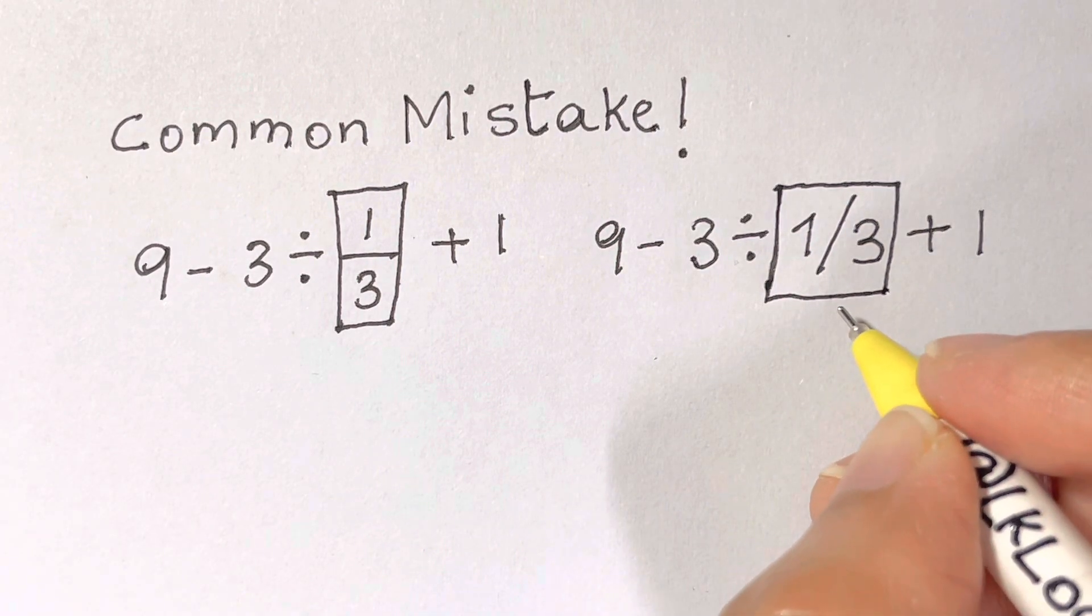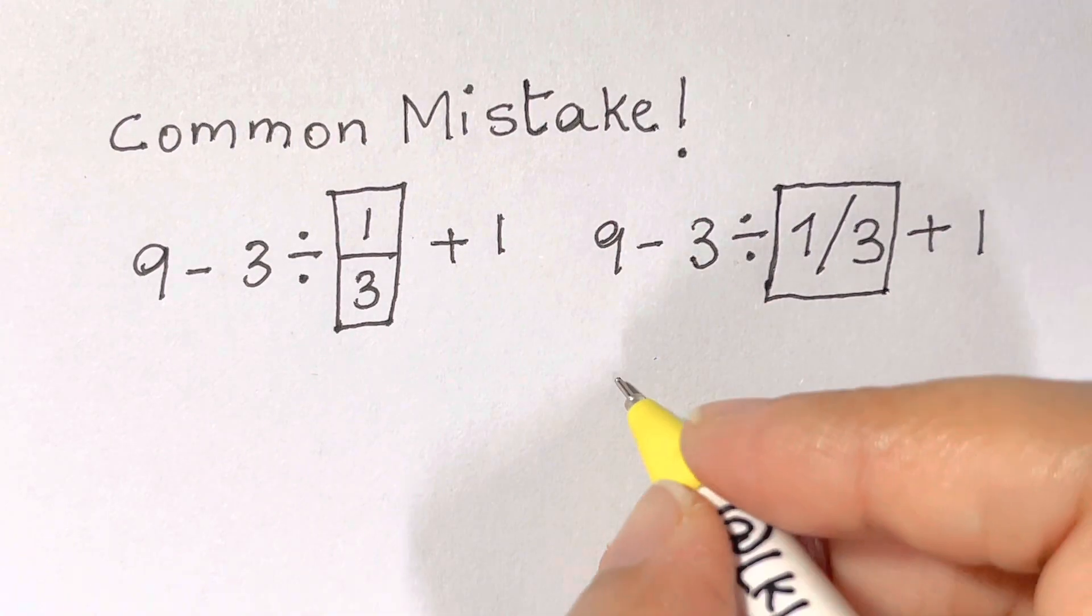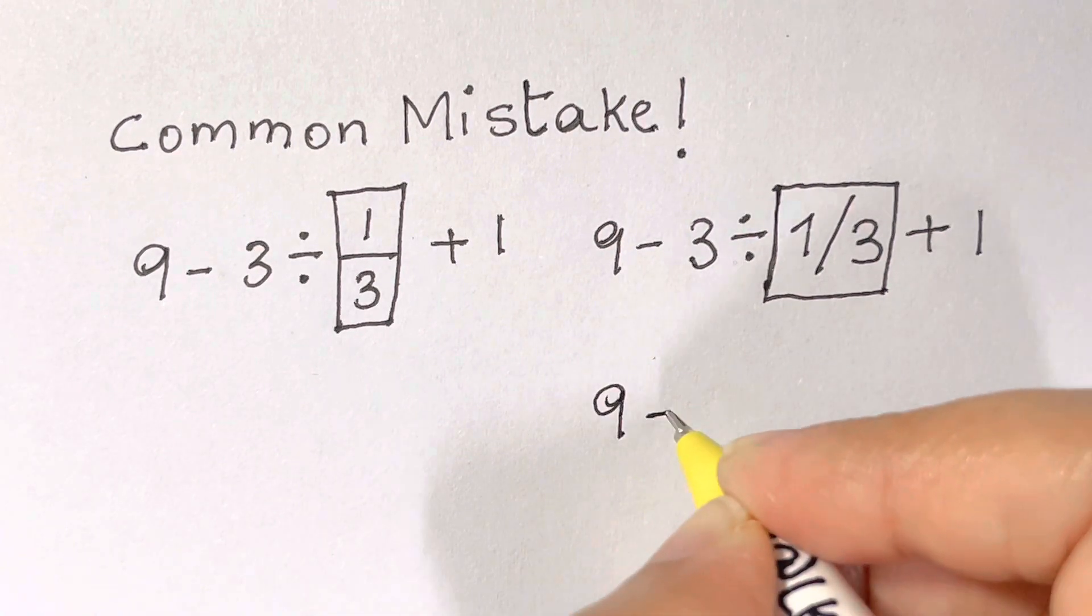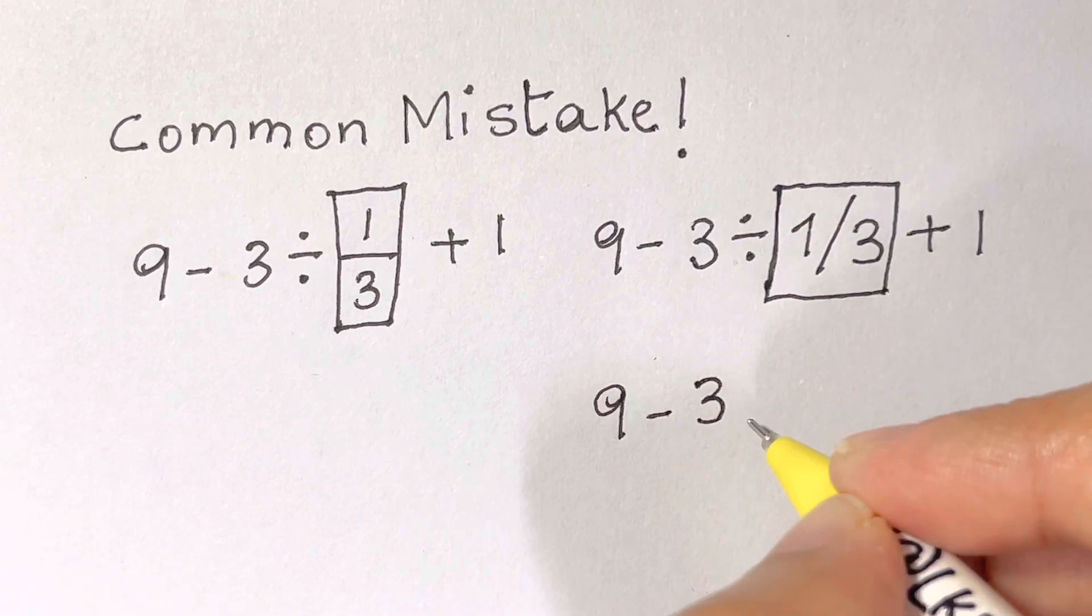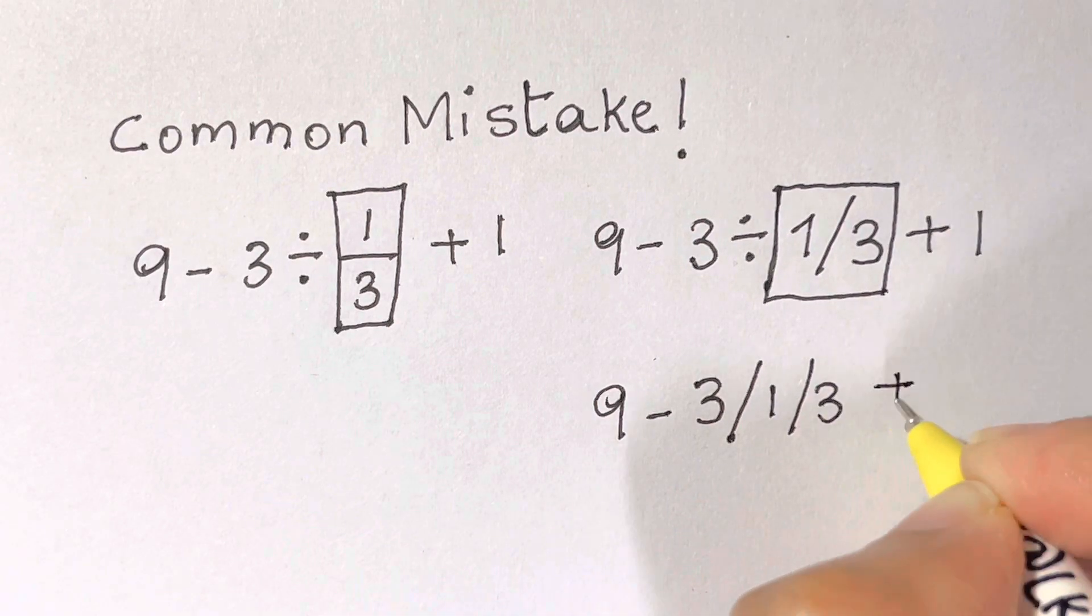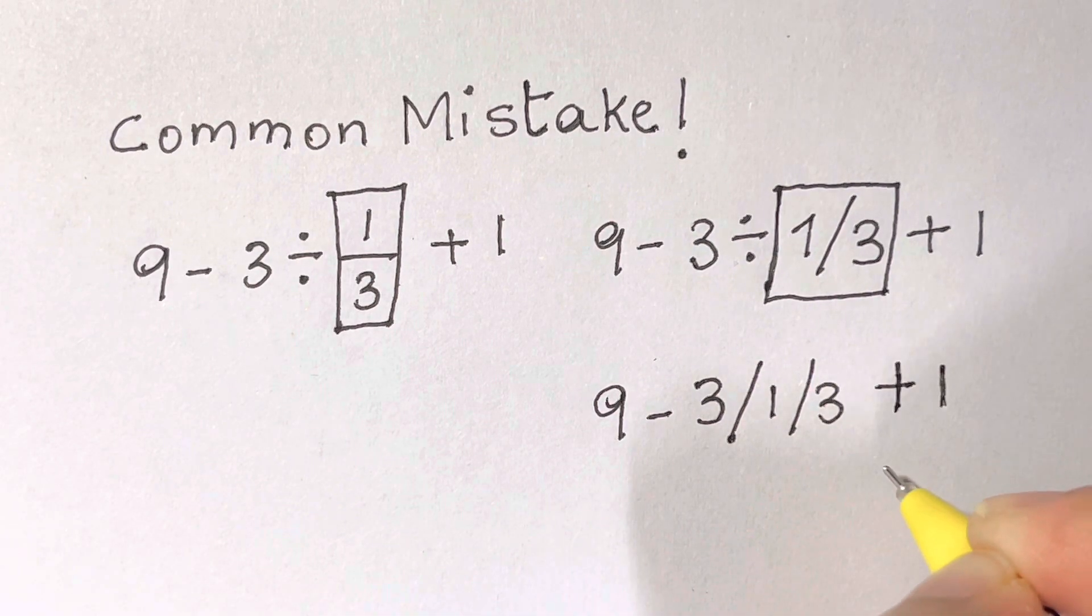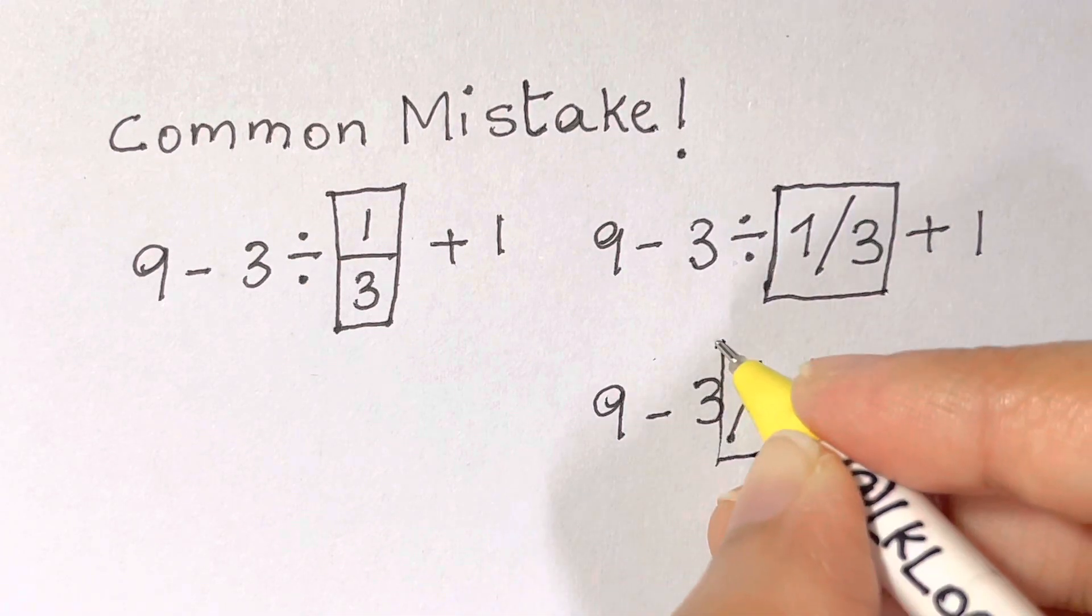However, I would discourage you from writing expressions in this form. It's not clear that the 1/3 should be grouped together because this expression uses both a division symbol and division slash, which are the same mathematical operation of division. Although you want the 1/3 to be grouped together, this expression is going to be evaluated by a calculator by converting a division symbol into a division slash.